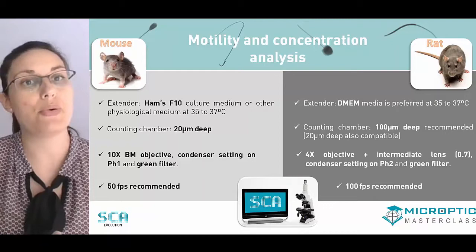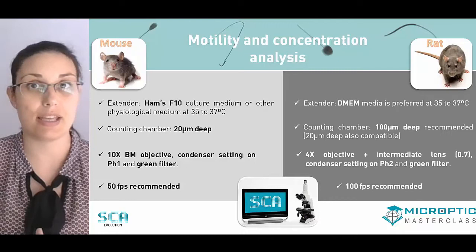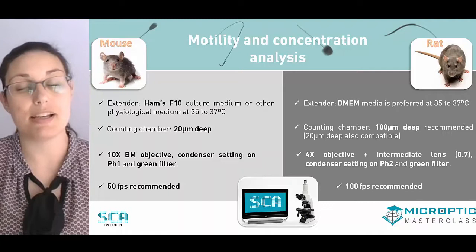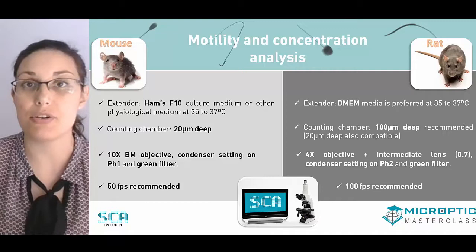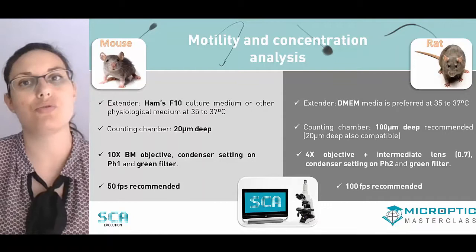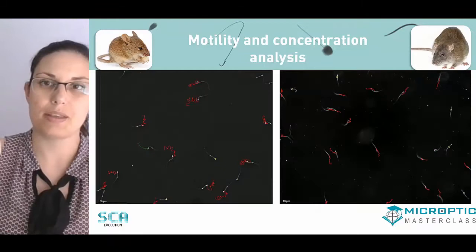The frame rate is very important for sperm analysis and depends on the velocity of the sperm cells. In the case of house mouse, it is recommended to work at 50 frames per second. Conversely, rat sperm can swim faster, so assessment should be performed at 100 frames per second.